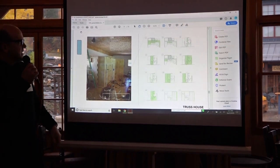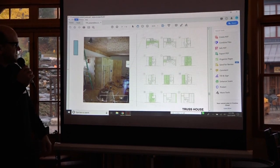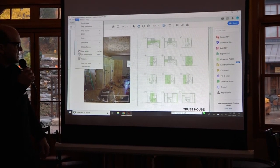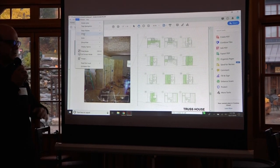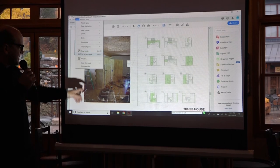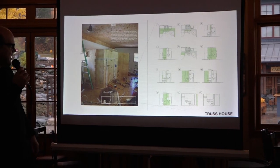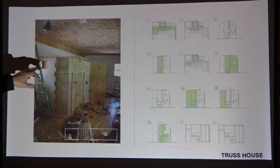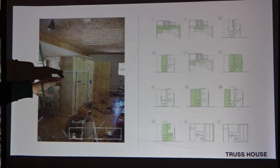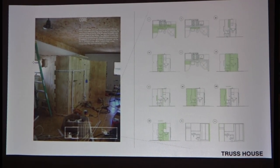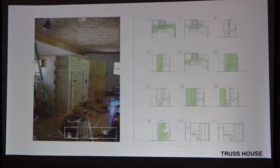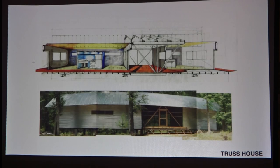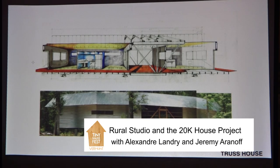Each piece of the core was cut on the CNC router at Auburn University. We drove the dually to the site and assembled the core using a mallet, with access panels to the utilities on the inside of the core.